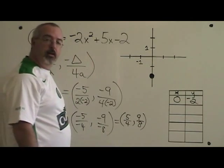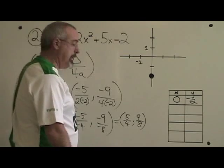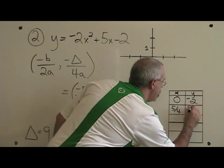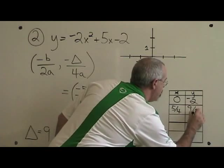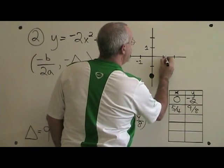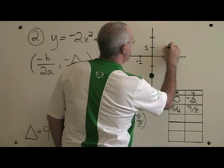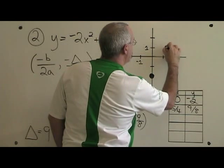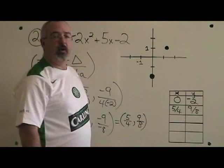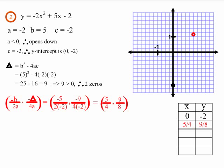We have to put this point into our table and on our graph. 5 fourths is about here, and 9 eighths is about here. So our point for the vertex is now on the graph. This is what example 2 looks like after we find the vertex.